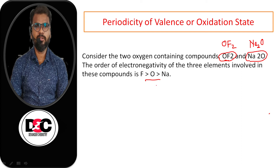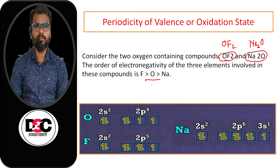Each atom of fluorine, with the outer electronic configuration 2S² 2P⁵, shares one electron with oxygen in the case of the OF₂ molecule. So in OF₂, each fluorine shares one electron with oxygen through covalent bonding, forming the compound OF₂.